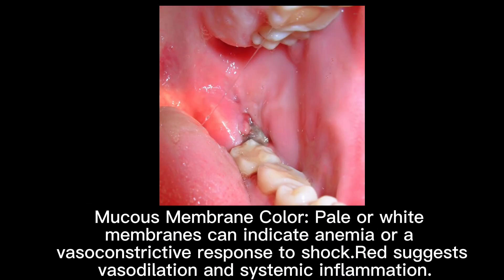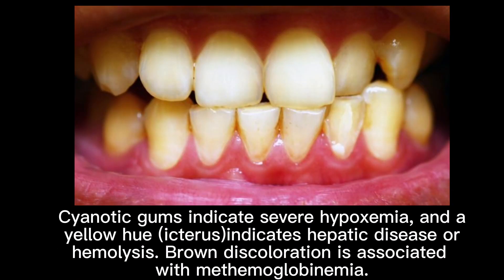Mucus membrane color: pale or white membranes can indicate anemia or a vasoconstrictive response to shock. Red suggests vasodilation and systemic inflammation. Cyanotic gums indicate severe hypoxemia, and a yellow hue indicates hepatic disease or hemolysis. Brown discoloration is associated with methemoglobinemia.